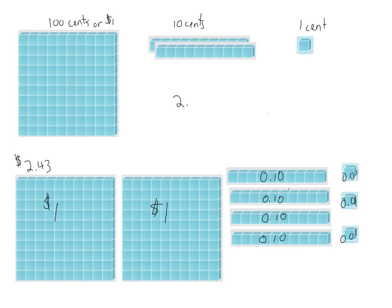Just a reminder when we do this: here are the dollars, here are the tenths — also known as dimes in this case — and here are the hundredths. The place value here that we're looking for is really important: hundredths. And the reason for that is we are going to express this eventually as a fraction, and then also as a percent.